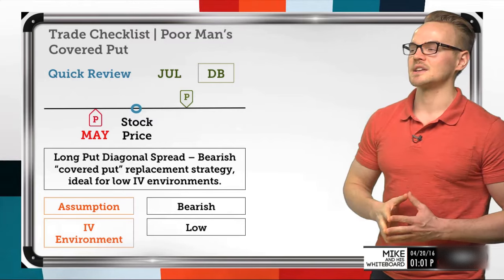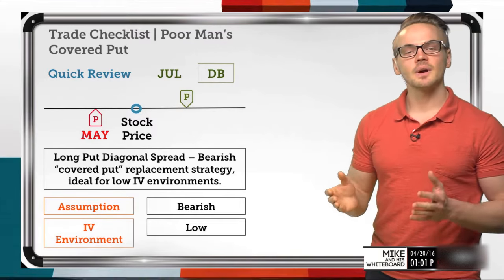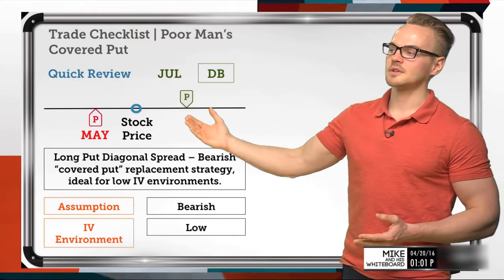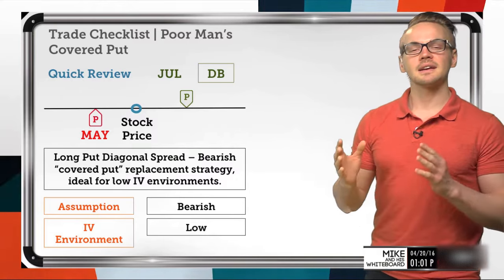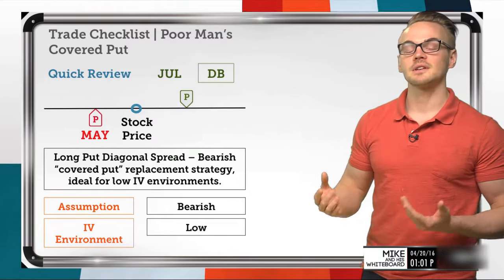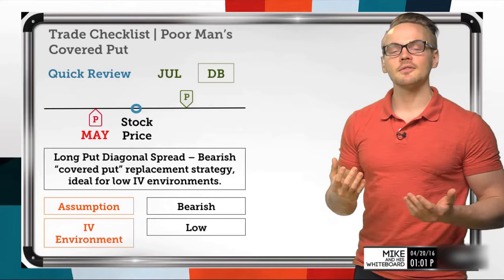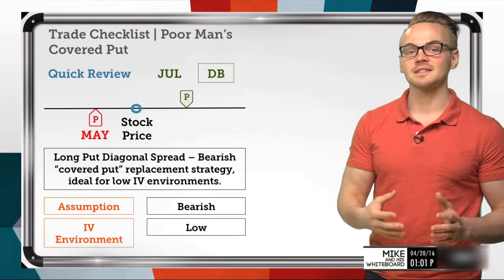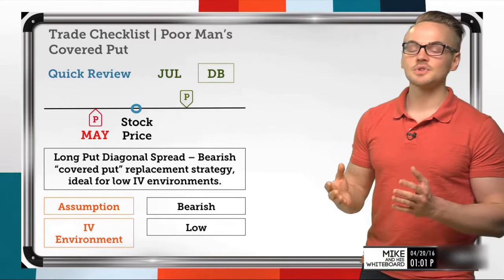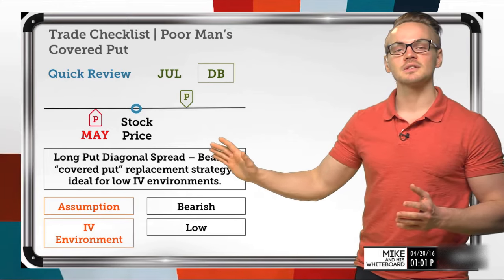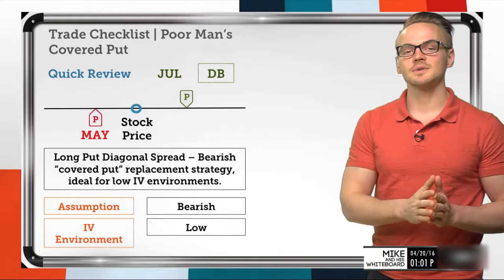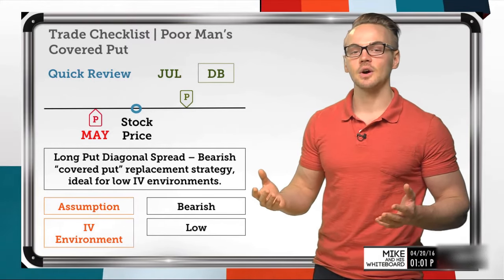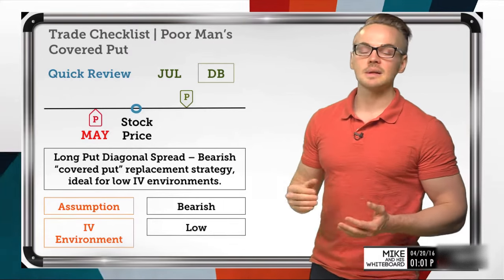When we're looking at this strategy, it's a great bearish strategy and a great way to replace the covered put strategy. The risk profile graph looks very similar to a covered put, except we don't have undefined risk to the upside. A covered put is simply selling 100 shares of stock and selling a put against that to reduce the basis of those short shares. But since we're short shares, we have unlimited risk to the upside — there's no cap to where a stock can go.